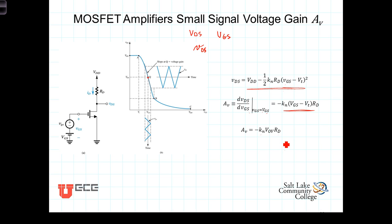Let's make some obvious observations here. First of all, you'll notice the minus sign. The output will be 180 degrees out of phase with the input. V_DS has a minus sign in front of the small signal term, or the time-varying term.